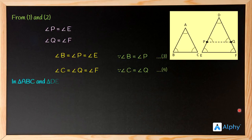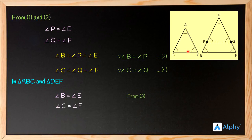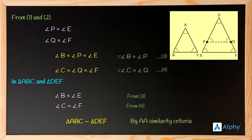In triangles ABC and DEF: angle B equals angle E from equation 3, and angle C equals angle F from equation 4. Therefore, by AA similarity criteria, triangle ABC is similar to triangle DEF, which is the required result.